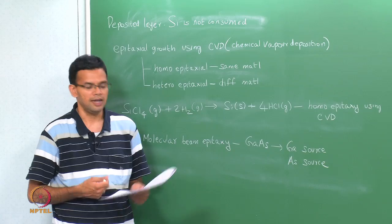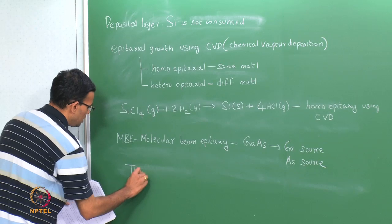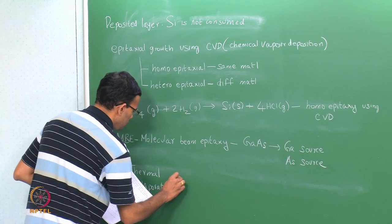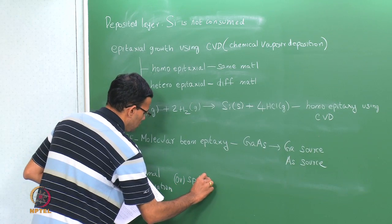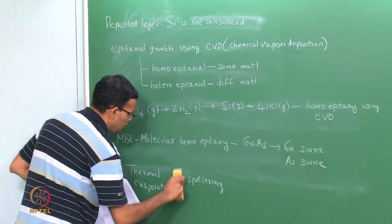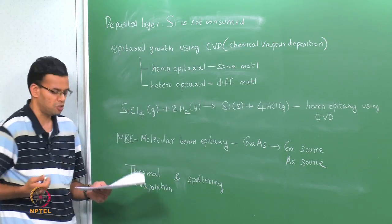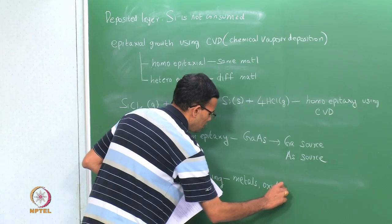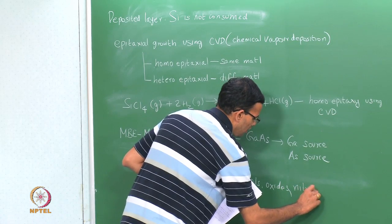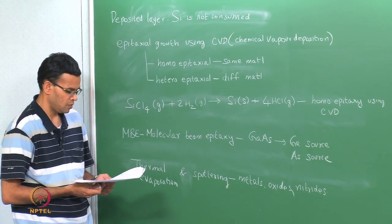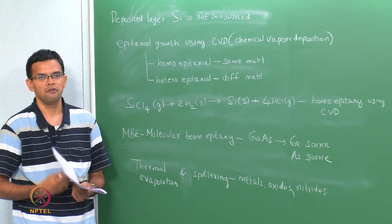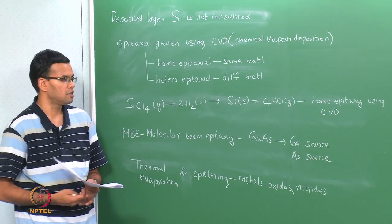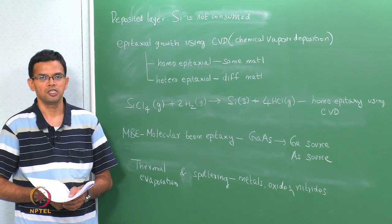You can also get a deposited layer by physical vapour deposition processes — thermal evaporation and sputtering. These can be used for growing metals, oxides, nitrides, and a variety of other materials. We have now looked at layering, which is a way of adding a thin film layer onto your substrate — here the substrate being the wafer.